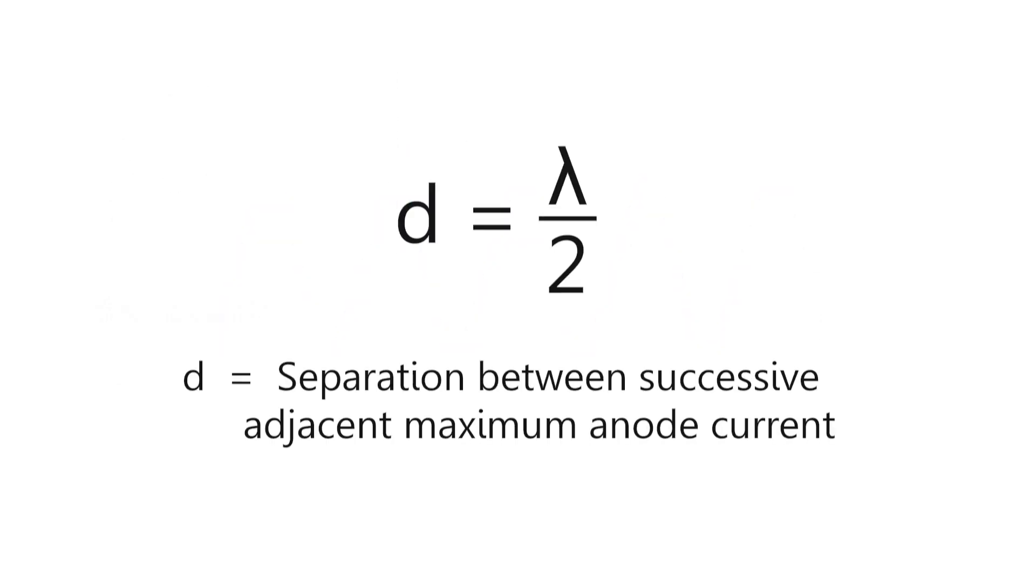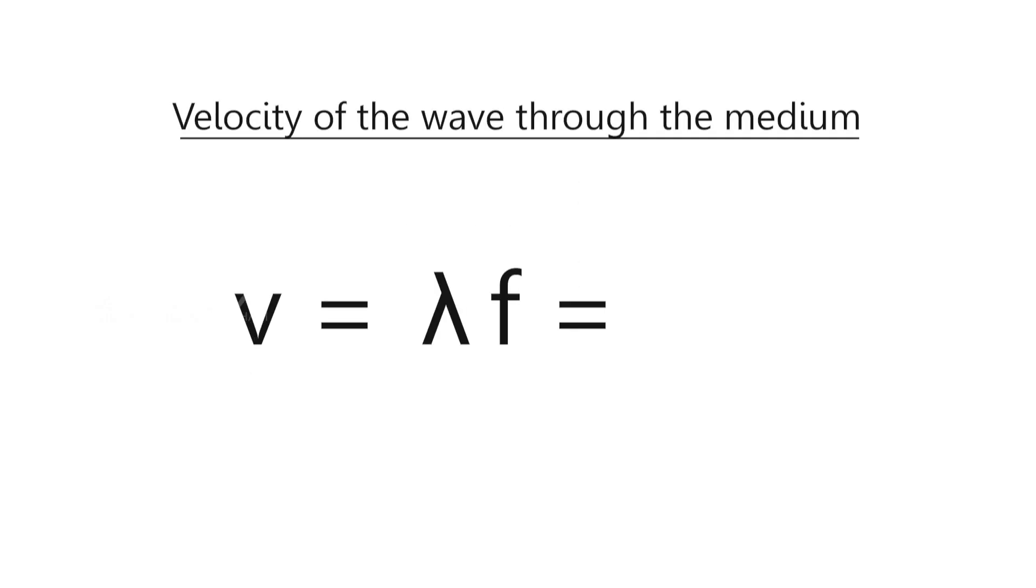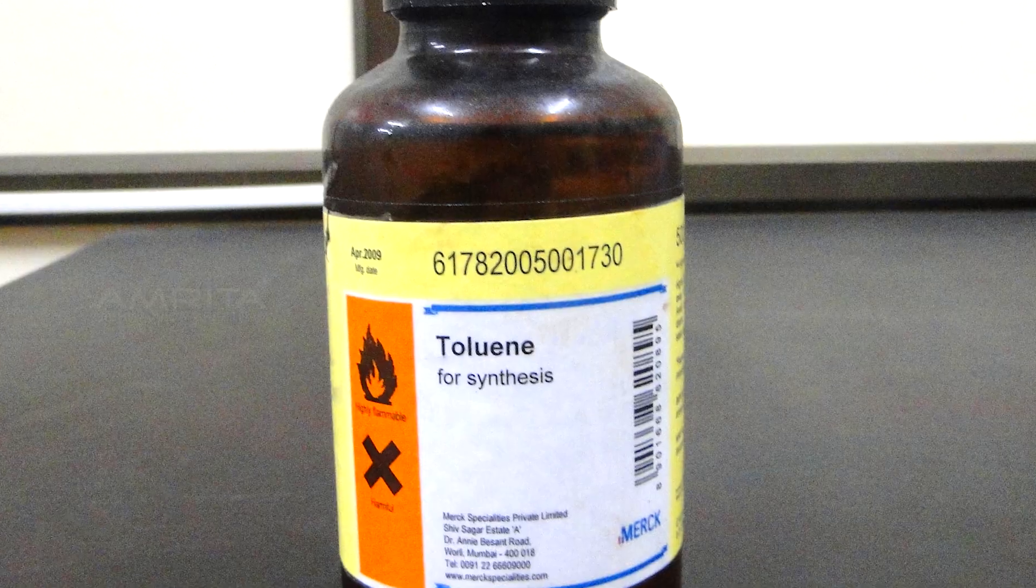Using the equation, calculate the velocity of the wave through the medium as v is equal to lambda f, which is equal to 2df. Knowing the density of the medium, the adiabatic compressibility can be calculated using the equation beta is equal to 1 by rho v square. Repeat the experiment using different samples.